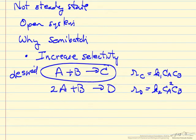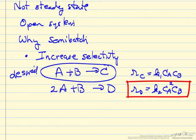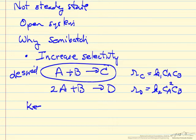then we'd like to keep the concentration of A low, since this reaction is proportional to concentration of A squared. If the concentration of A is low, we preferentially favor the first reaction.